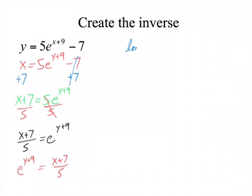So, I have log base e, because the base of the exponents e. And then, inside of that, I'm going to have the x plus 7 divided by 5. And on the other side, I have the y plus 9. So, what I did is I put log right here, and I switched this with this. See how I switched them?